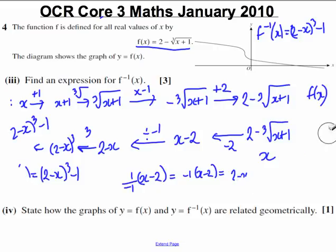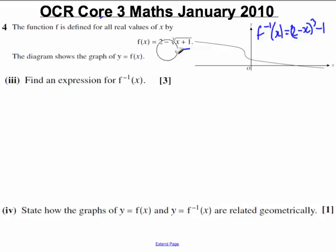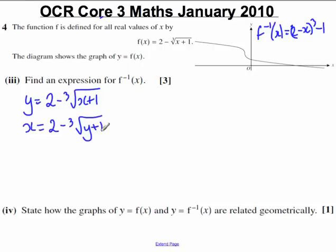Now there is another method of doing this. What we said is you can say let y equal 2 minus the cube root of x plus 1. You can swap x and y, just literally swap the x and y. This is a method that happens to work. And then you try and make y the subject of the formula.